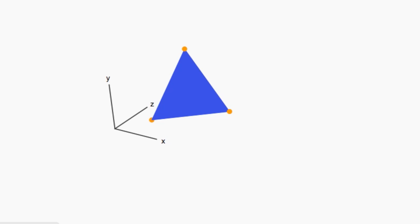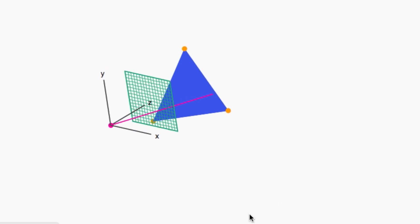As we explained earlier, we pick a camera position, call it C, and a viewing direction. And we construct an image plane perpendicular to the viewing direction. This is where our image will be formed.